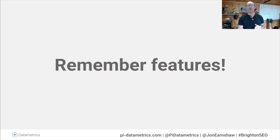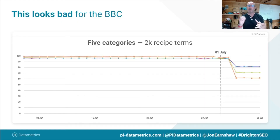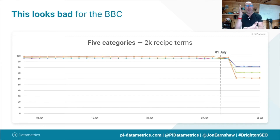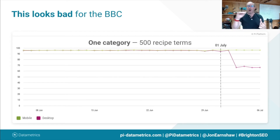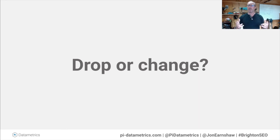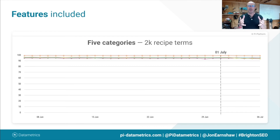Features are becoming more important within the SERP. Let's take a look at the BBC — 2,000 recipe terms, BBC Good Food page. Just after the July 1st update — was this the algo? No it wasn't, because when algos drop they drop precisely: dropped on the first, changes visible on the second or third. So this was not the algorithm. What was it? First, separate out mobile from desktop — mobile was completely unaffected. This is raising the question: was it a drop, or has something changed? Let's include features in the mix: the same 2,000 terms split into five categories. With features, they haven't dropped — the landscape has changed and they're still visible but in a different form.